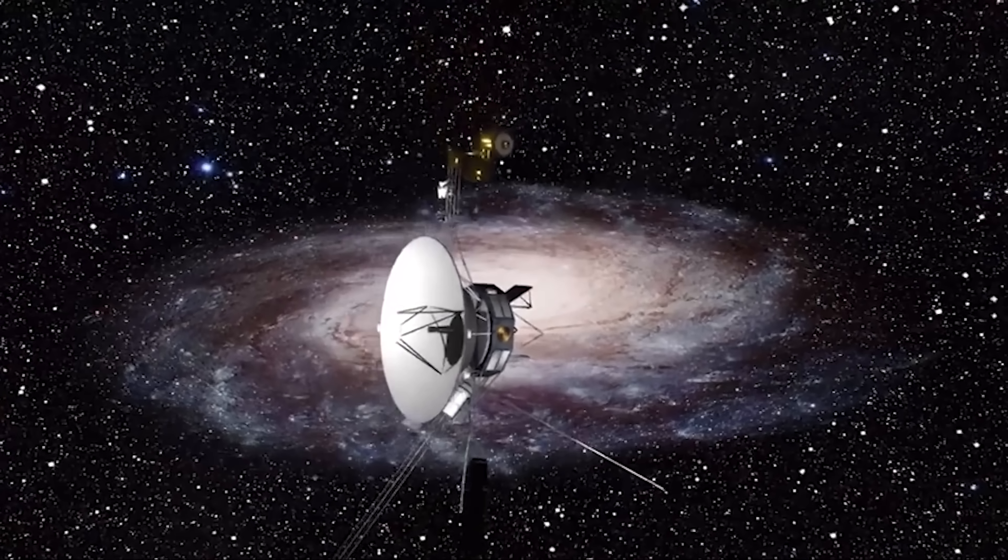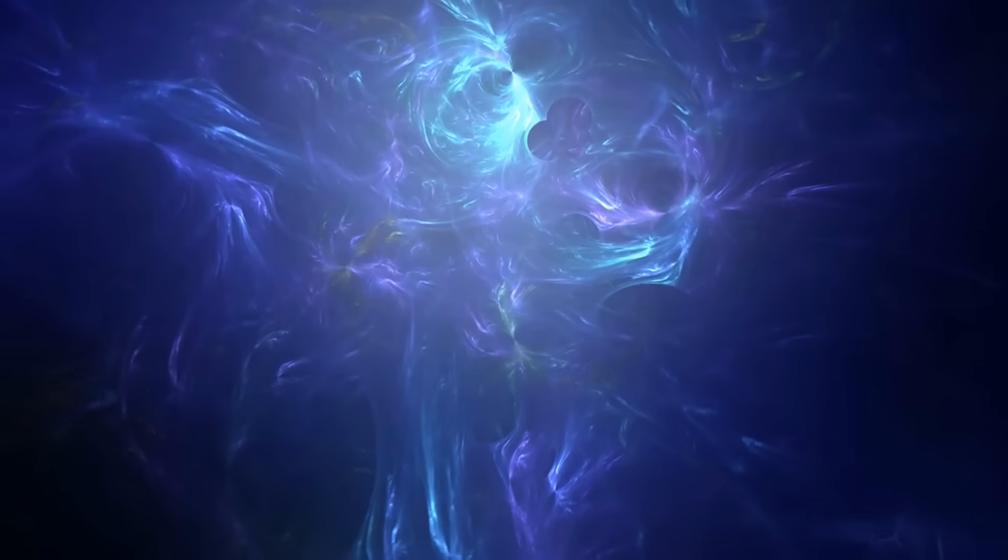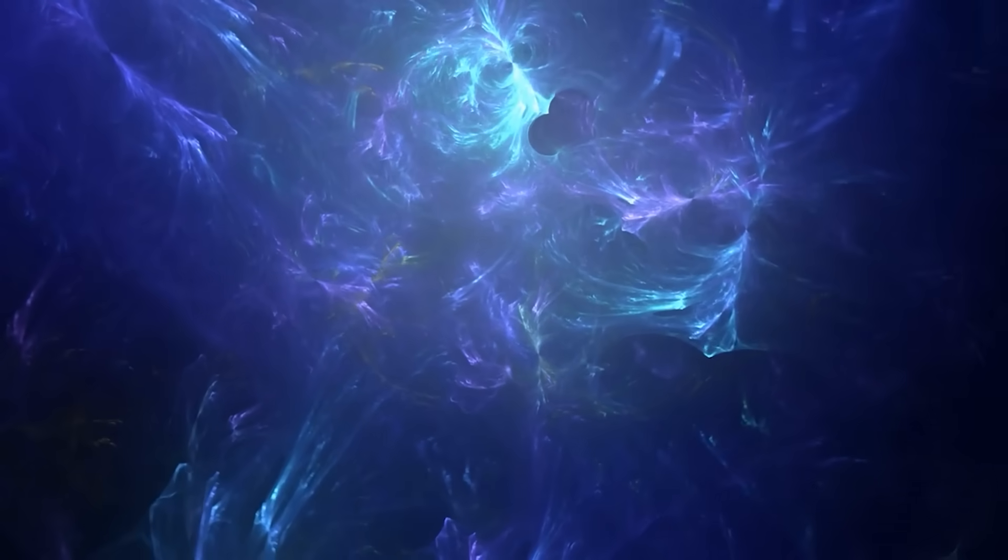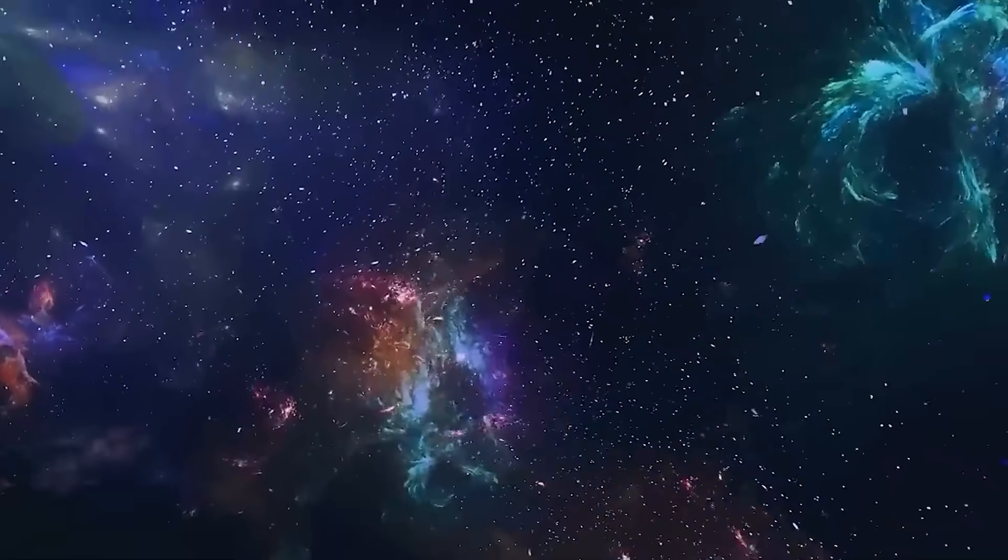Voyager 2's instruments contradicted this, showing regions of dense, vibrating plasma oscillating in harmonics far more intense than expected. These were not gentle ripples, but robust waves, carrying energy and possibly information across vast distances.